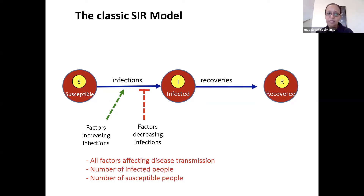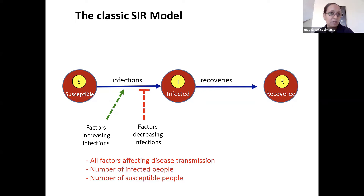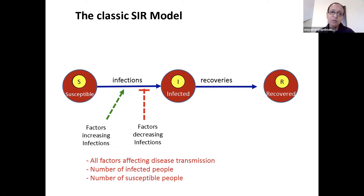With COVID, we're at the beginning of the epidemic. About 18 million people have had COVID out of 330 million in the US, so the vast majority are still susceptible — we haven't even reached 10% infected or recovered. But towards the end of an epidemic, if maybe 10% of the population is still susceptible and 90% have recovered, there aren't many susceptible people to be infected, and therefore the rate of infection slows down as well.